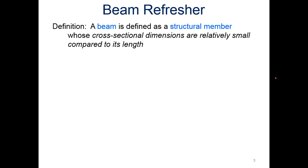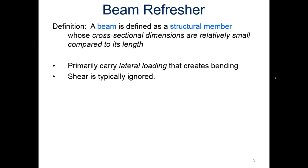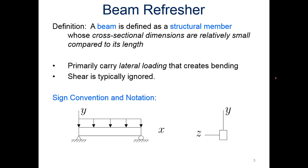A quick beam refresher. Beams are defined as a structural member whose cross-sectional dimensions are relatively small compared to its length, so really long compared to the cross-sectional area. They primarily carry lateral loading that creates bending, so we're mainly looking at that lateral loading creating the bending. Shear is typically ignored.